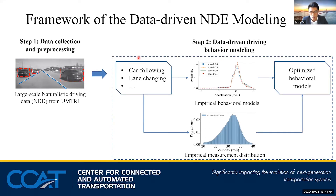The second step is data-driven driving behavior modeling. From the NDD, we can classify the driving behaviors into different categories, for example, car following, lane changing, free flow, etc. We can then get the empirical behavior models and empirical distributions of the behaviors. For example, this figure shows the longitudinal acceleration distribution in free-flow driving situations given different speeds of the ego vehicle. However, due to inevitable data noise and the high-dimensional nature of human driving behaviors, simply using the empirical behavior models may result in bad results because the error would accumulate along the simulation.